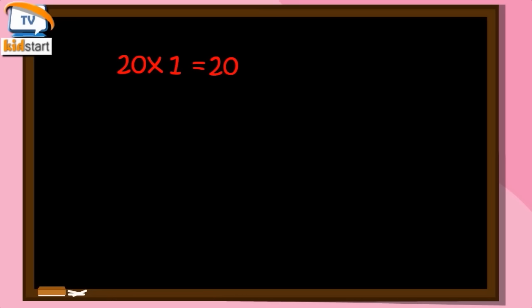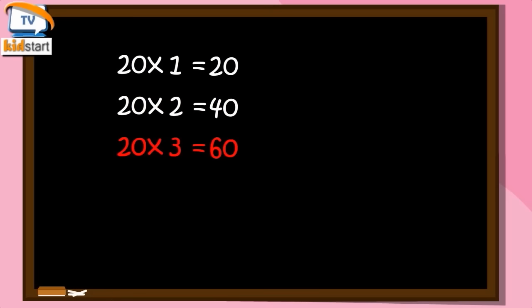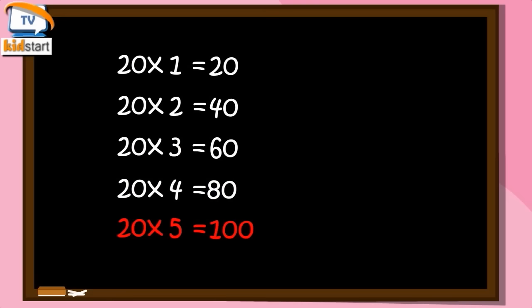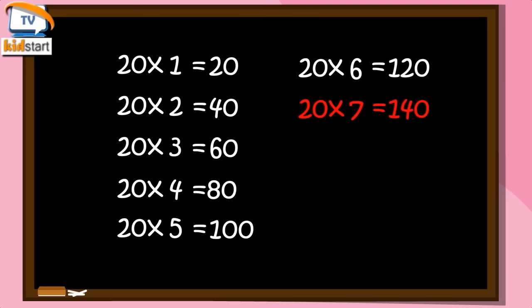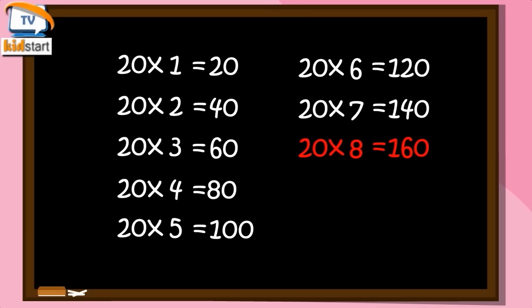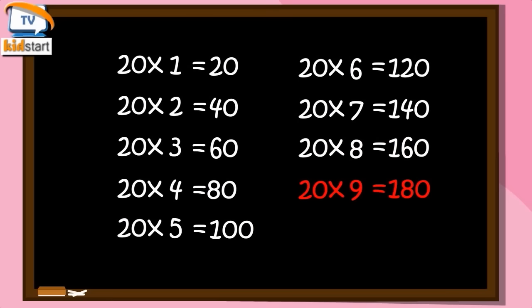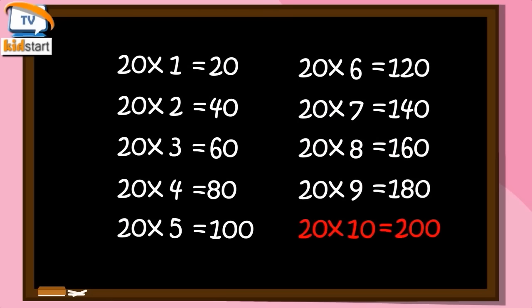Twenty ones are twenty. Twenty twos are forty. Twenty threes are sixty. Twenty fours are eighty. Twenty fives are hundred. Twenty sixes are one-twenty. 27s are 140. 28s are 160. 29s are 180. 20 tens are 200.